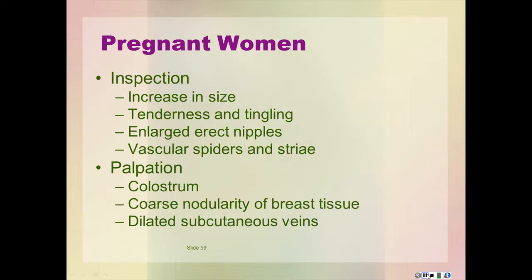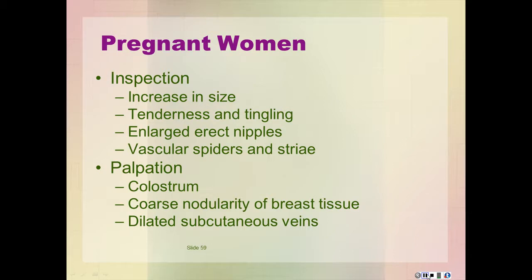In the pregnant female, the nipples enlarge and are more erectile. As the pregnancy progresses, the nipples sometimes become flattened or inverted. A crust caused by dried colostrum can be evident on the nipple. Inspect the breasts and expect to see areola that are broader and darker. Montgomery tubercles are common. Palpation reveals a generalized coarse nodularity and the breasts feel lobular because of hypertrophy of the mammary alveoli. Dilated subcutaneous veins may create a network of blue tracing across the breasts.